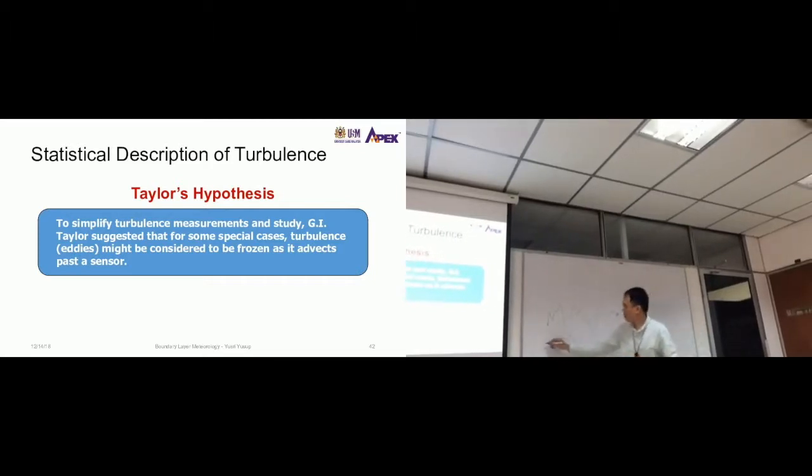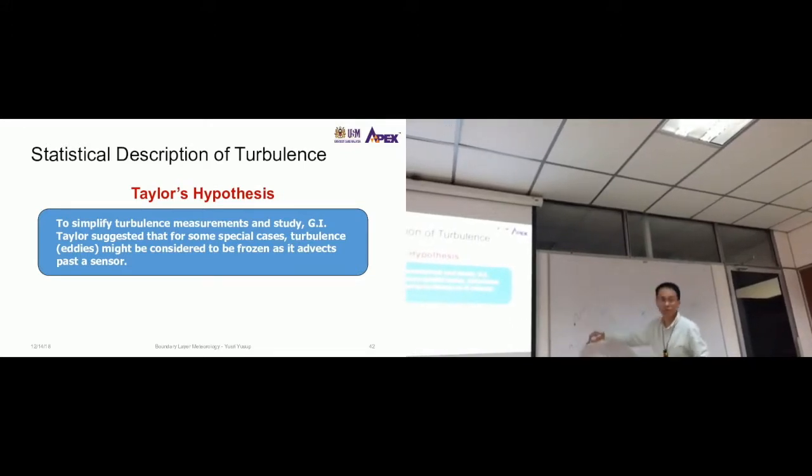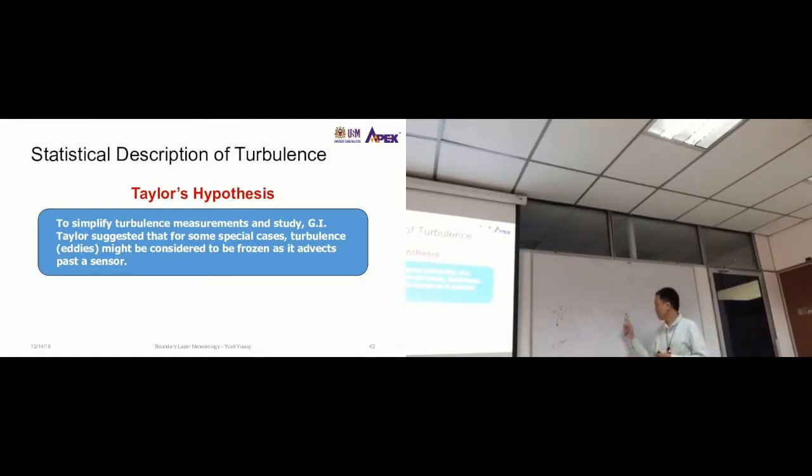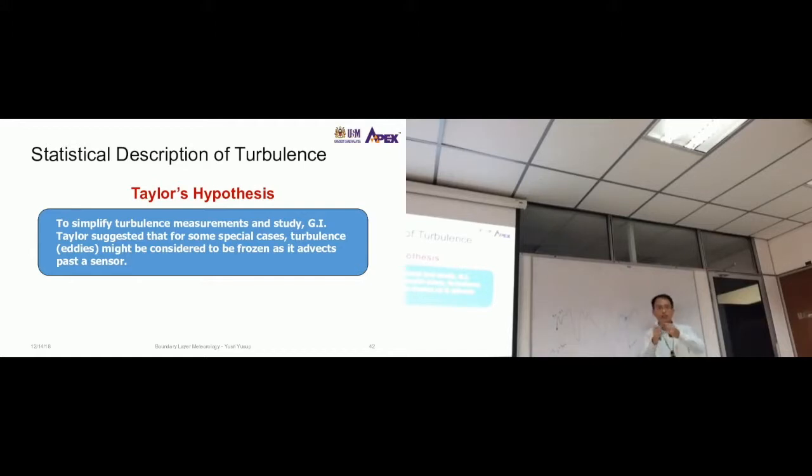At time one it's this value, at time two is this value, time three is this value, and this variation as it passed through is going to be the same. Maybe at this point, time two is 30 seconds from here, and this is at zero seconds. So after 30 seconds this sensor would experience the value at this time, and this is going to be maintained as it goes through the sensor.